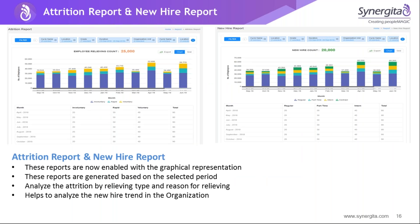Next, we can see about the attrition report and new hire report. Similarly, in this report we have also introduced graphical representation. This will help HR to analyze attrition in the organization based on relieving type and reason for relieving. HR can also track the new hire trend in the organization using this report. You can see the relieving type such as involuntary, which can be tracked on a month-on-month basis, based on the selection made when generating the report.